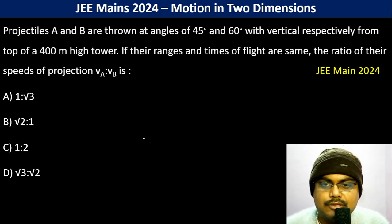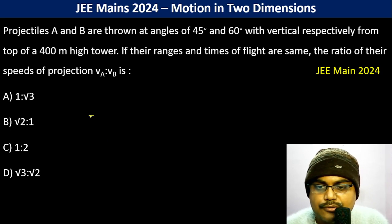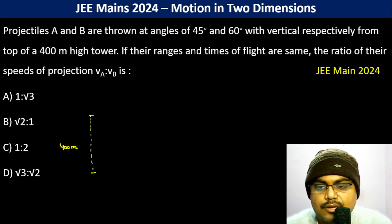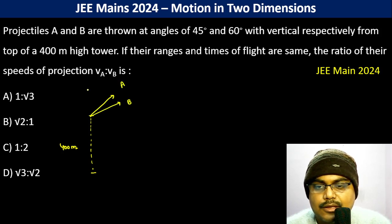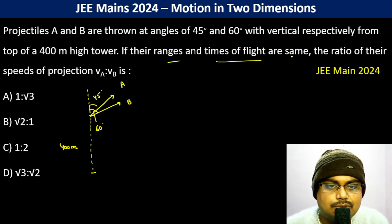Projectiles A and B are launched at angles of 45 degrees and 60 degrees with the vertical respectively from the top of a 400-meter tower. Projectile A is at 45 degrees with the vertical and B is at 60 degrees with the vertical. The ranges and times of flight are the same.